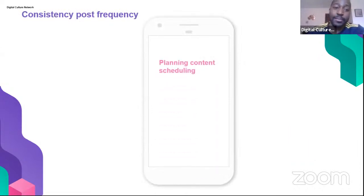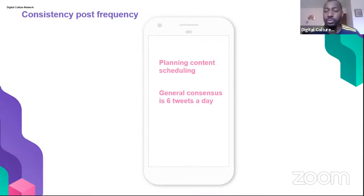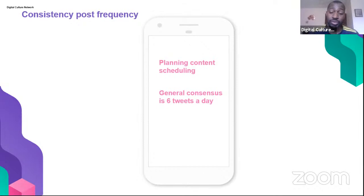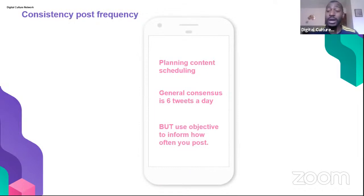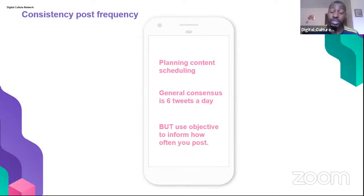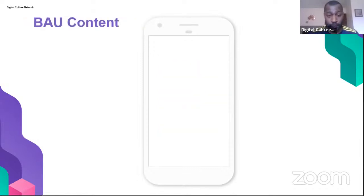The general consensus is six tweets a day for consistency on the platform. With 6,000 tweets per second there's enormous content being shared, so you need some presence. However, use your objectives to inform how often you post — if your objectives are small, six tweets a day may not be necessary. Think about your personal and organizational resources and what you're trying to achieve to realistically determine your posting frequency.